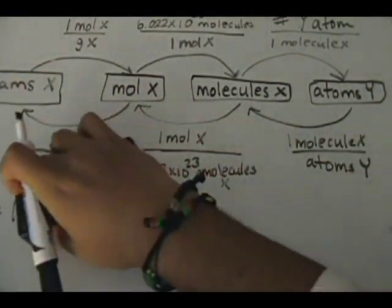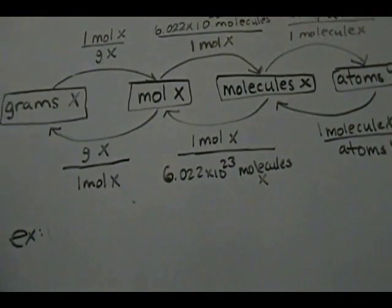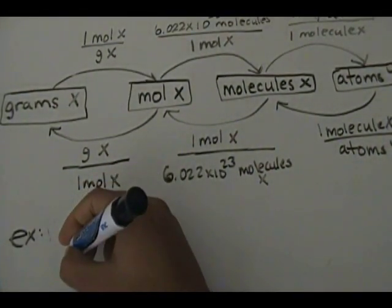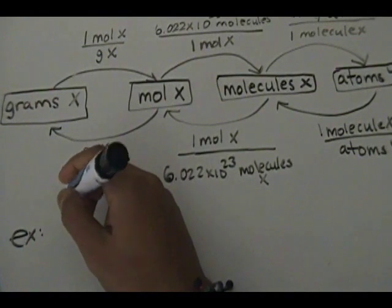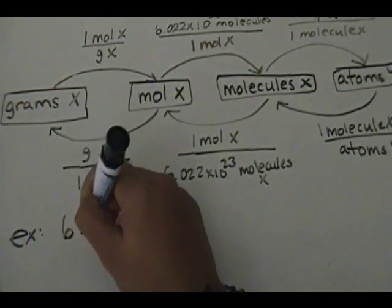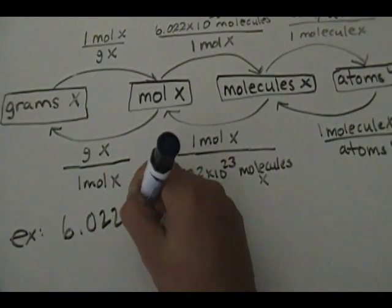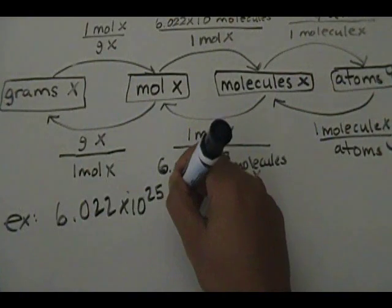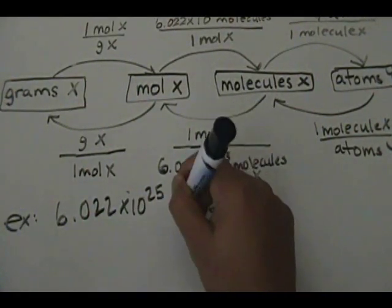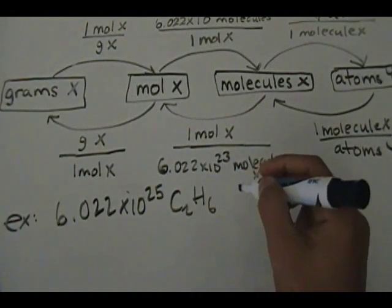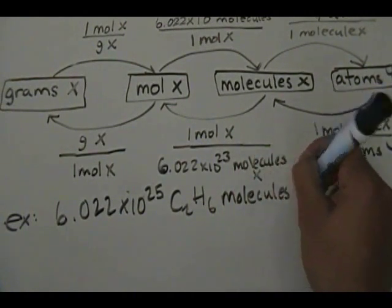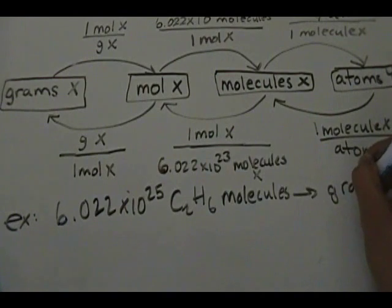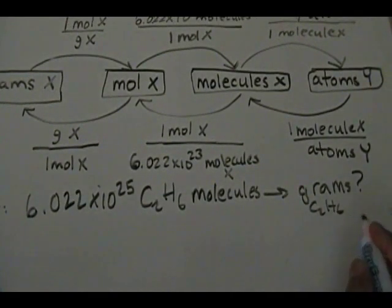Let's mix it up a little bit. Let's say we have 6.022 times 10 to the 25th C₂H₆ — which is ethane — molecules. How many grams does that translate to of C₂H₆? That's what it's asking: how many grams of C₂H₆ is that?